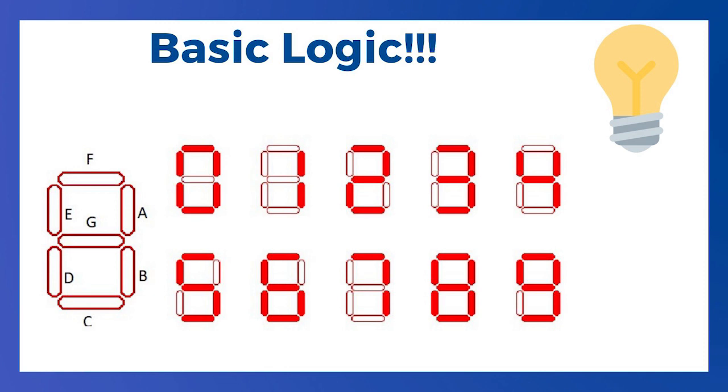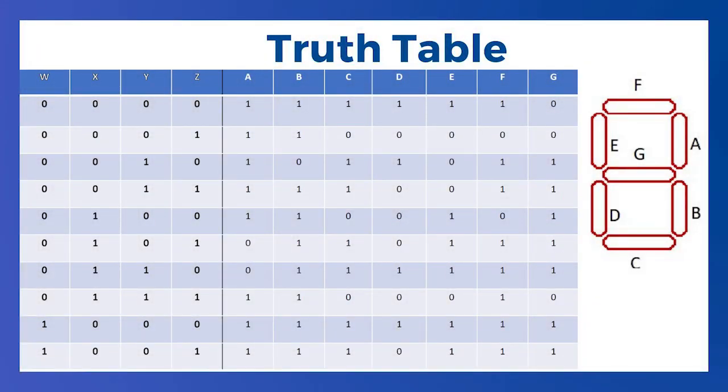Hence, similarly we can make all digits from 0 to 9. If we consider switch off as 0 and switch on as 1, we can make all digits from 0 to 9 with the truth table on your screen. Here WXYZ in sequence represent the binary representation of number, and A to G represents state on and off of LED strips A to G.